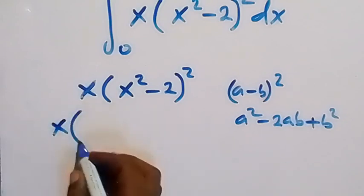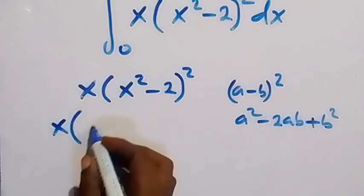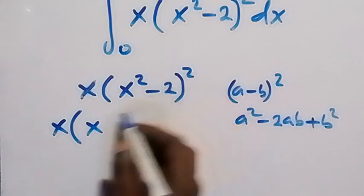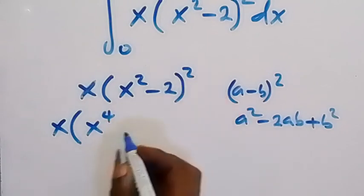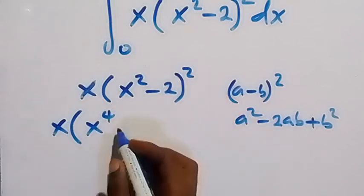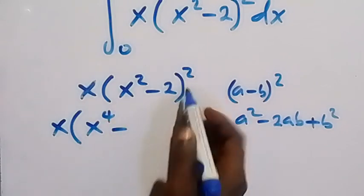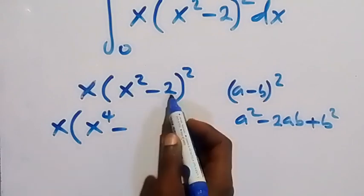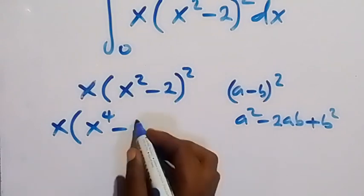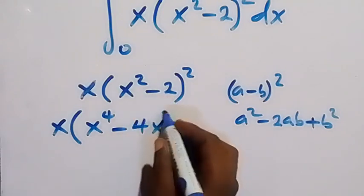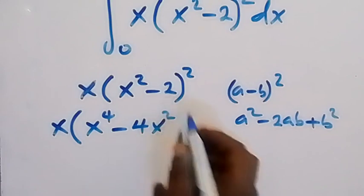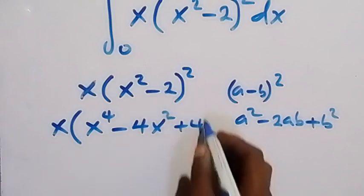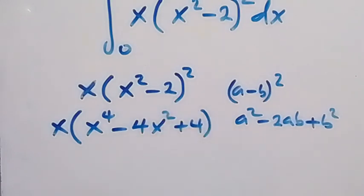Applying that formula here, (x² minus 2)² gives us x² squared, which is x to the power 4, then minus 2 times x² times 2, that's minus 4x², then plus 2 squared which is plus 4.